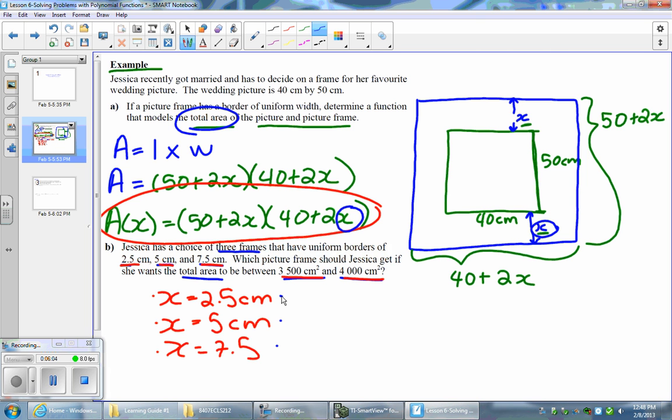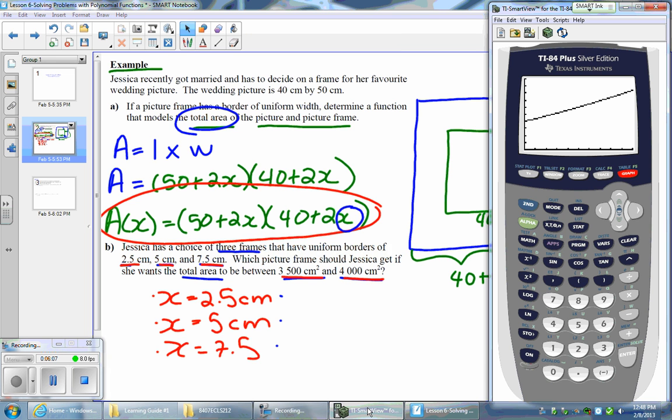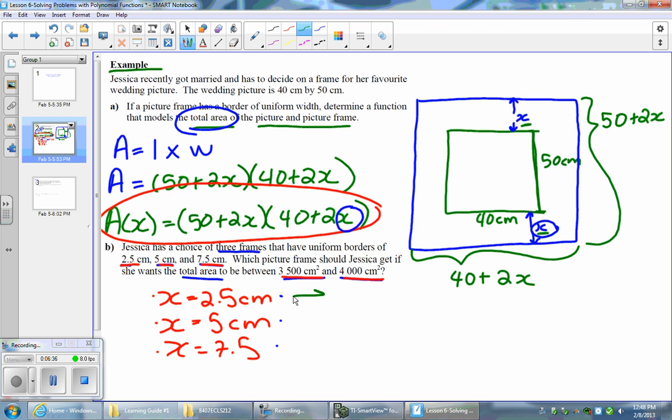There's three different values we need to evaluate the function with. Let's try x equals 2.5. There's a nifty tool on your calculator. You're going to go second trace, pick one for value, and what that allows you to do is plug in any x value and it's going to give you the corresponding y value. So put in 2.5 and it's going to give you a corresponding y value. That means when x equals 2.5, the area is equal to 2,475 square centimeters.